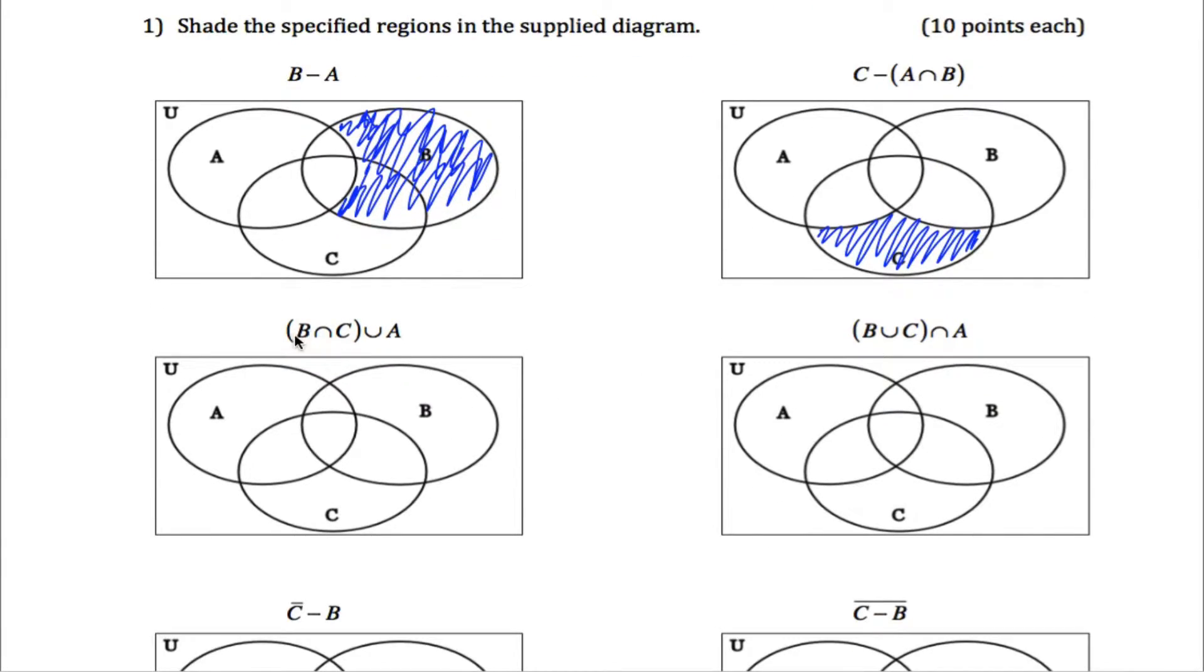And then over here, you're finding the intersection of B and C. So that's the stuff that falls in both B and C. I'm talking about this football region right here.